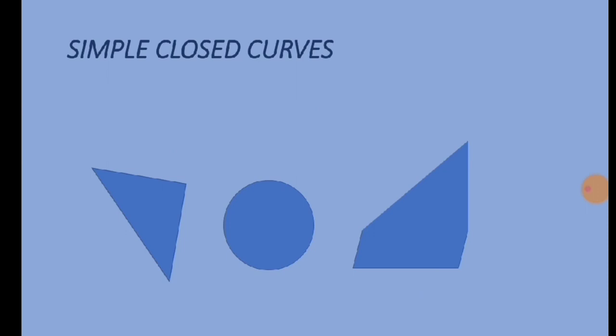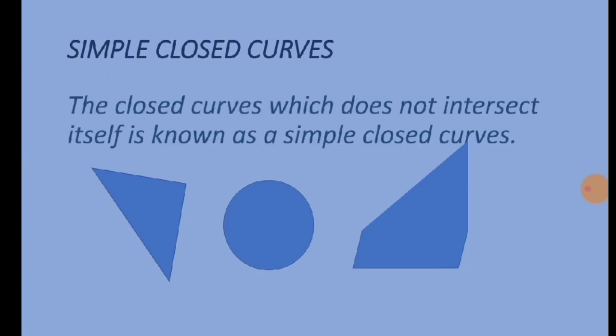Simple closed curves: The closed curves which do not intersect itself is known as a simple closed curve. Examples of simple closed curves are triangle, circle, or any closed figure that does not intersect.